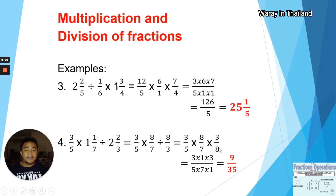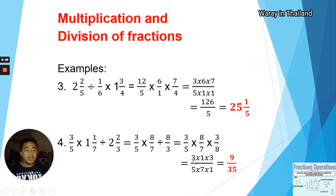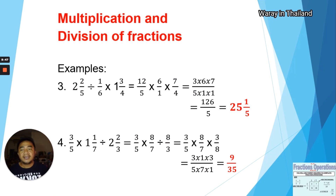We change the division to multiplication, and eight over three becomes three over eight. Now we check if we can reduce to lowest terms: eight and eight — dividing by eight gives one and one. No other terms share common factors. So we have three times one times three in the numerator and five times seven times one in the denominator. Three times three is nine, and five times seven is 35. Therefore the answer is nine over 35, which is a proper fraction.